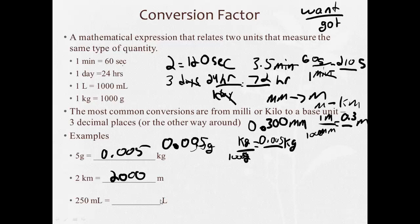250 milliliters equals how many liters? Well, I can move the decimal three places to the left, because I'm going from small to big. One, two, three, and get 0.250 liters. Or, I could say 250 milliliters is equal to a certain number of liters. Do what you want over what you got. There are 1,000 milliliters in one liter. So, 250 divided by 1,000 gives me my 0.250.